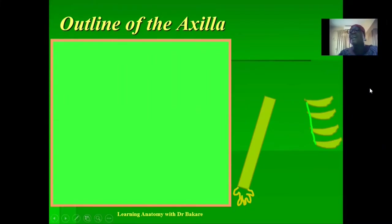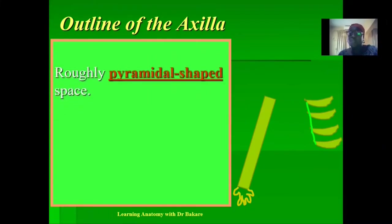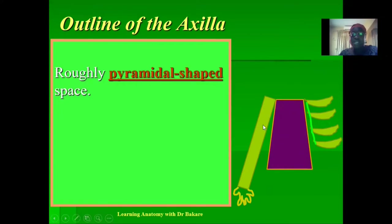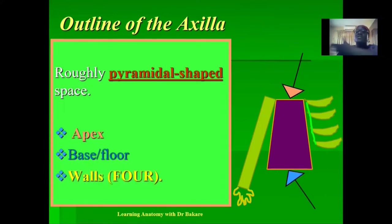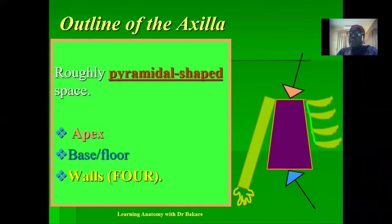The axilla is a roughly pyramidal-shaped space created between the lateral wall of the thorax and the upper limb region, inferior to the shoulder joint. Being pyramidal in shape, it presents an apex at the top, a base or floor at the bottom, and four walls: the anterior wall, the posterior wall, the medial wall, and the lateral wall, positioned based on their anatomical relation with the body.